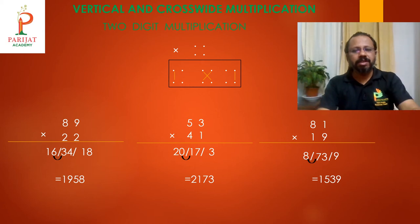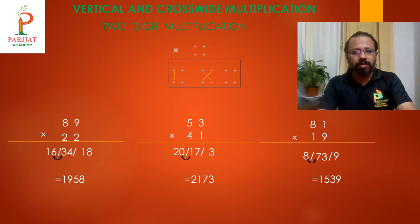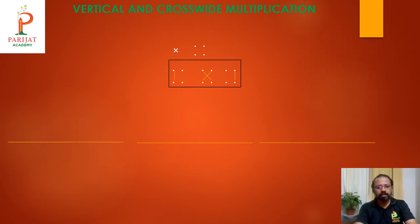This is a unique calculation technique where you can multiply any two-digit number by any two-digit number — no conditions, no restrictions. This is the vertical and crossword multiplication method. Students, do practice at home regularly and solve the online test given in this course. Thank you.